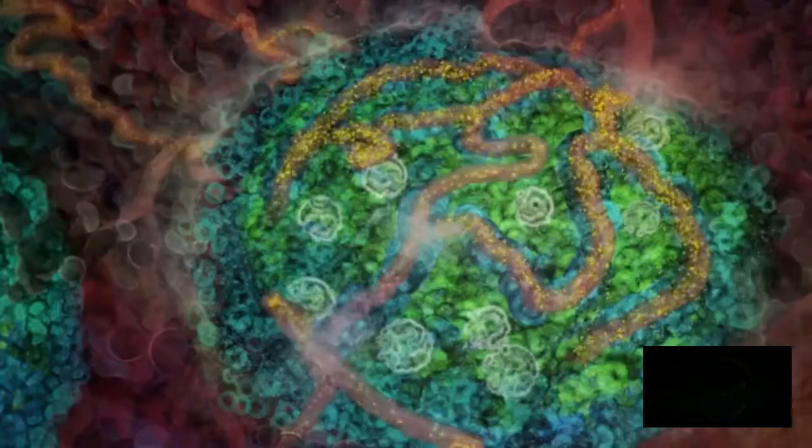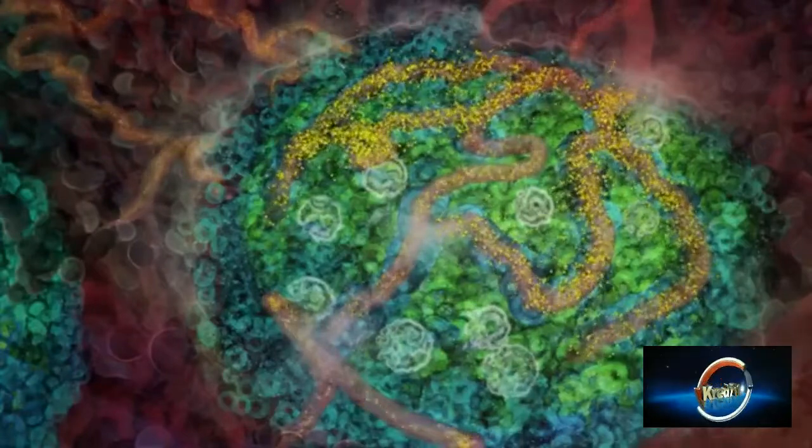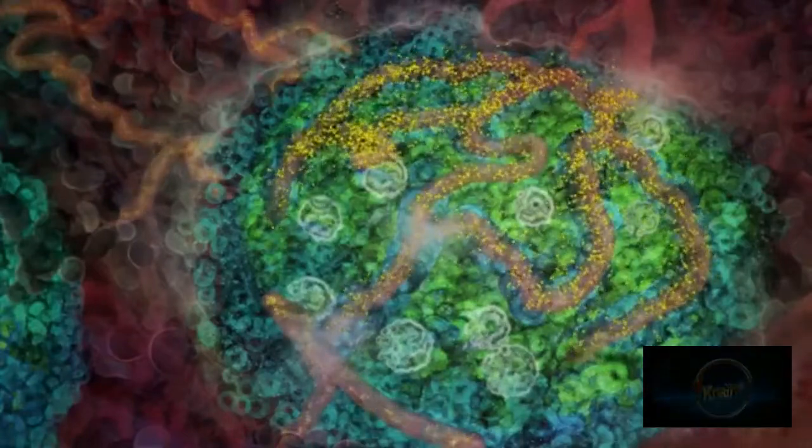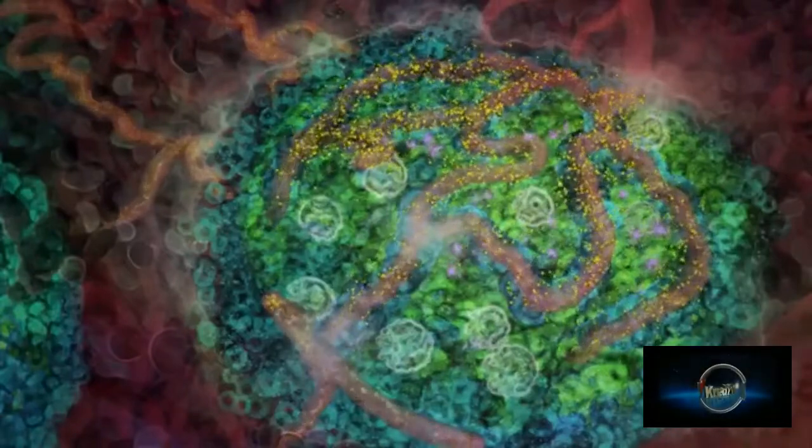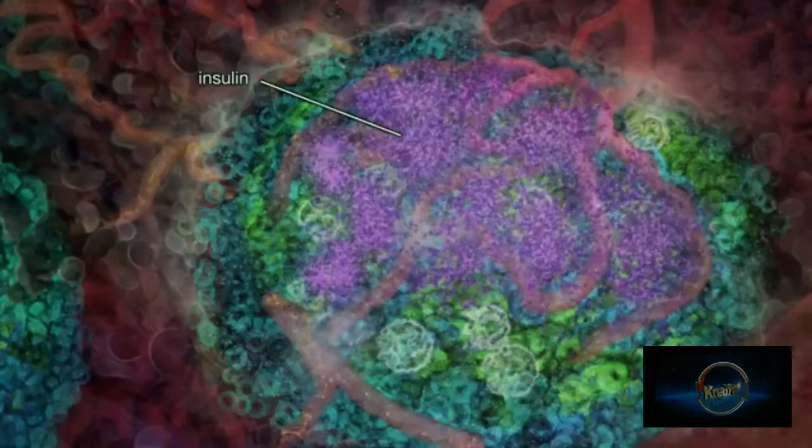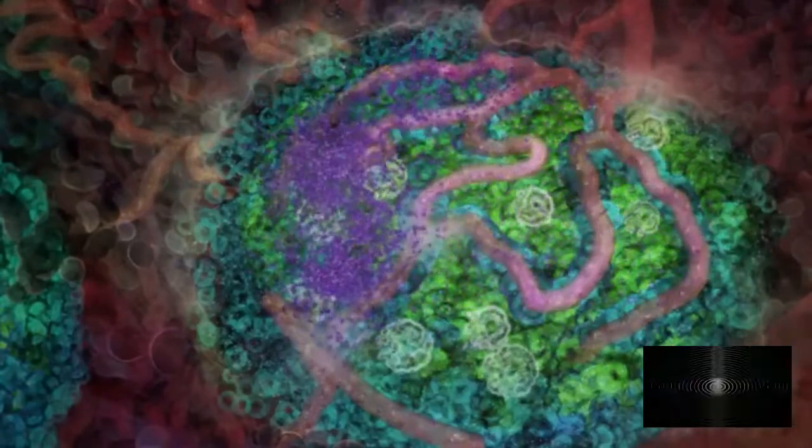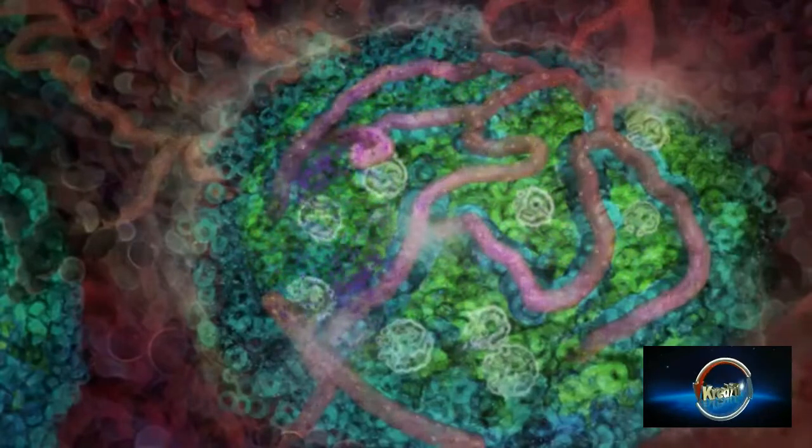In type 2 diabetes, high levels of glucose stimulate the beta cells to produce lots of insulin to lower the blood glucose levels. The insulin is taken up by the blood vessels for transport to muscle, liver and fat where it allows those tissues to absorb glucose.